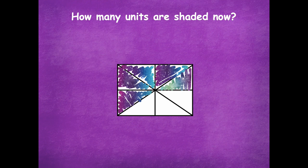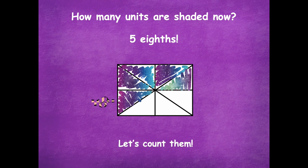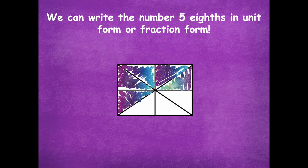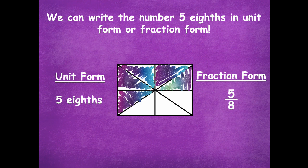I've shaded in some more now. So how many units are shaded? Five-eighths. Let's count them: one-eighth, two-eighths, three-eighths, four-eighths, and five-eighths. We can write five-eighths in unit form or fraction form. Unit form is 'five eighths.' Fraction form uses numerical numbers — the top number is how many are shaded, and the bottom number, the denominator, is always how many total equal parts there are.